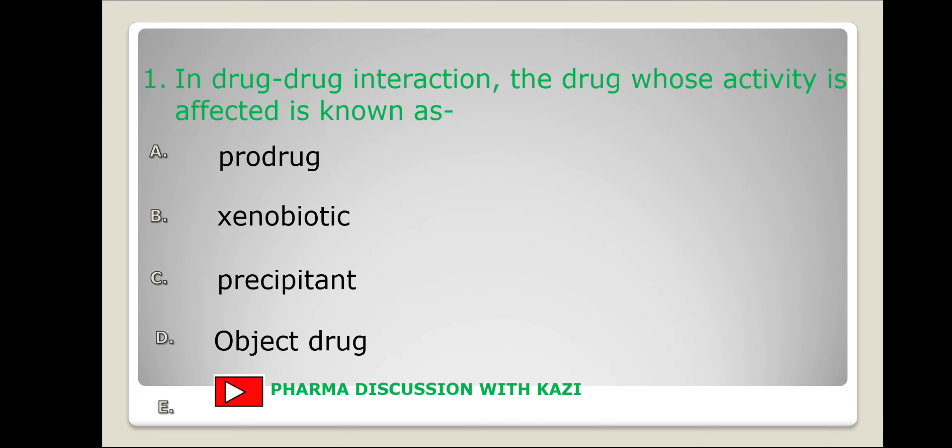Now the first question: in drug-drug interaction, the drug whose activity is affected is known as — prodrug, xenobiotics, precipitant, or object drug? I am discussing all four terms one by one.